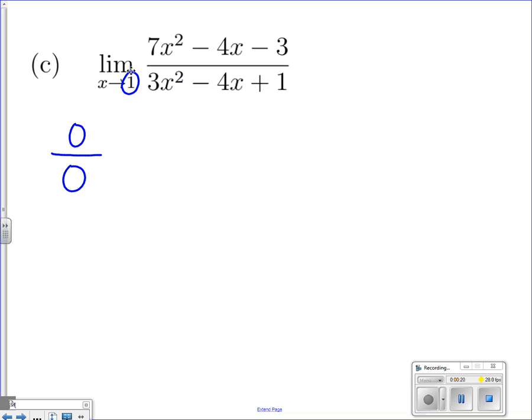So one thing that we can do to kind of counter that is to go ahead and factor this to see if something ends up canceling out. So we're going to go ahead and factor our top and bottom. So when we do that,